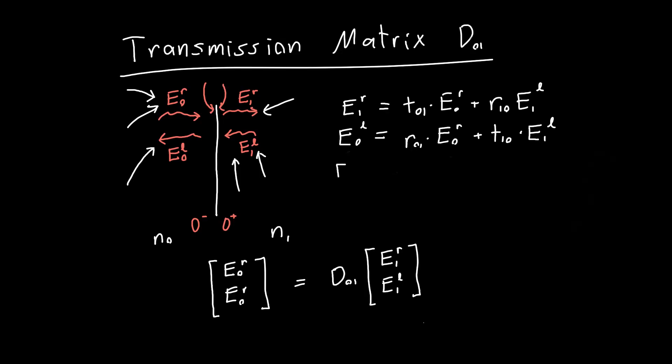But notice, if we were just to directly take these as the coefficients of our matrix, we'd see that we'd have E1R and E0L. But we want this to be E0R. So really, we have to rearrange these equations so that we have them in terms of E0R and E0L. And when we